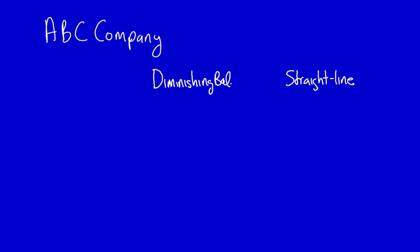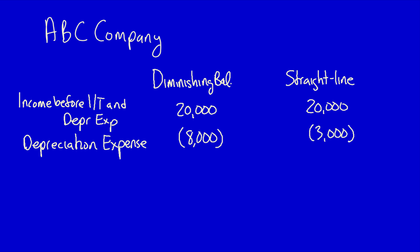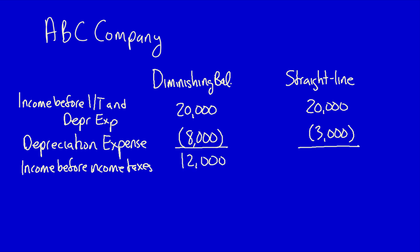Let's look at income before income tax and depreciation expense: $20,000 under diminishing balance and $20,000 under straight line — both equal because we haven't included depreciation expense yet, which changes between the two methods. Under diminishing balance, assume depreciation expense would be $8,000. Under straight line, assume it would be $3,000. Income before income taxes would therefore be $12,000 under diminishing balance and $17,000 under straight line.